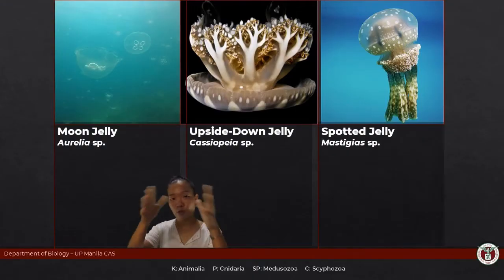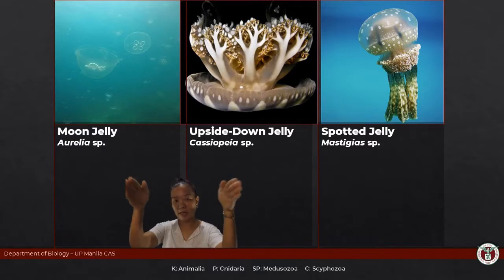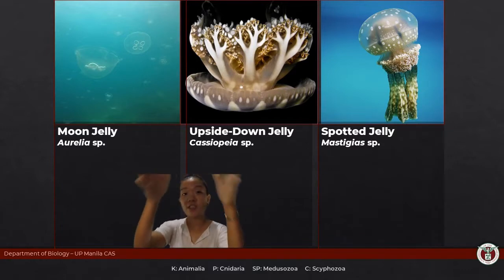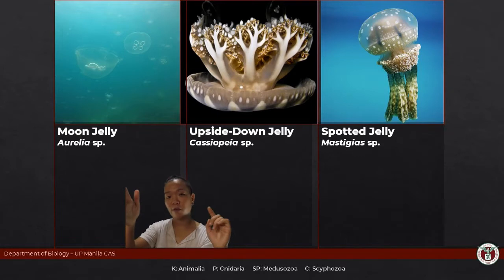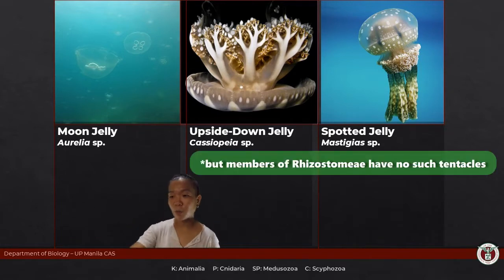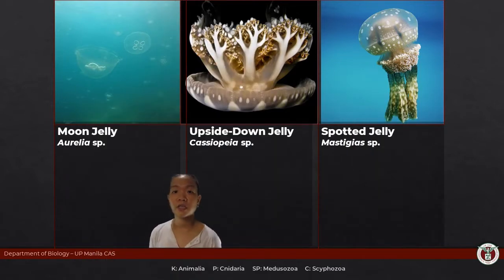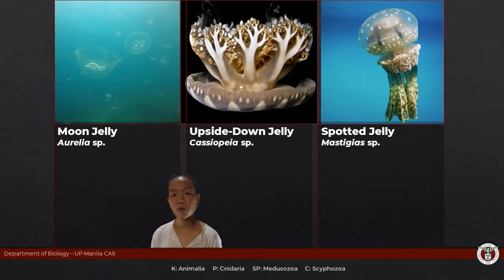Scyphozoans: the swimming bell does not have a velum, so the bell just collapses broadly. The tentacles are found along the margin of the bell. Those large structures visible in the center are not tentacles — they are oral arms. Oral arms and tentacles are different structures.